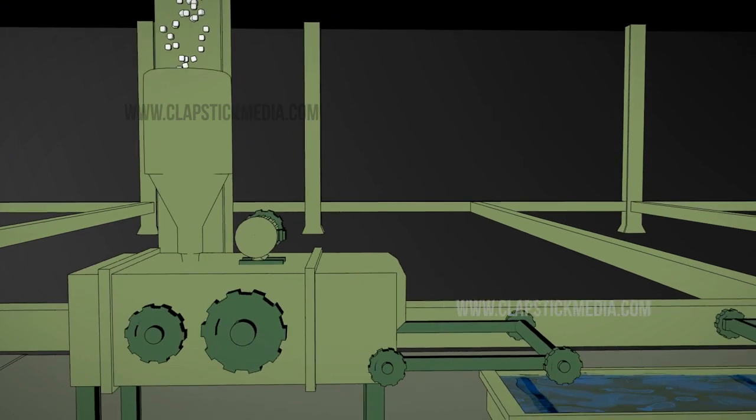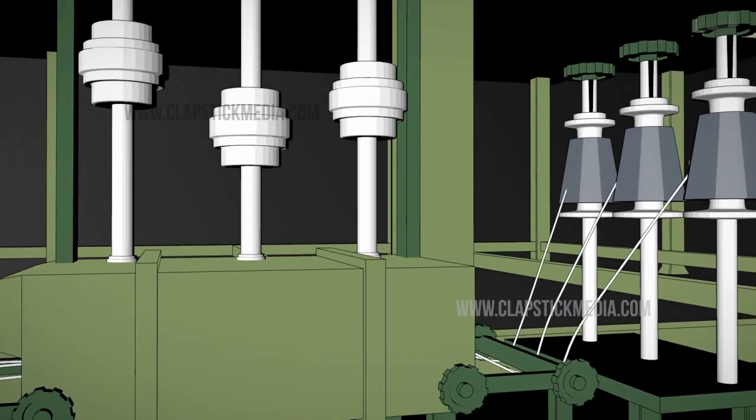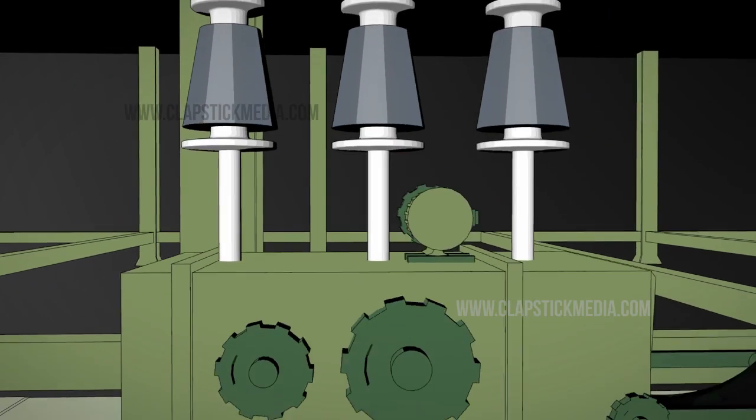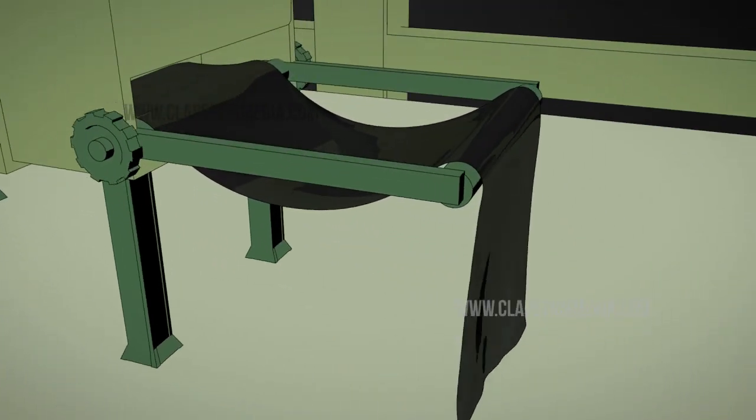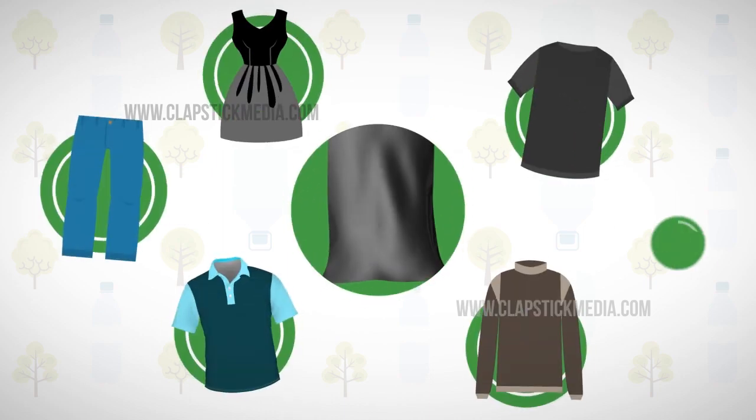Using special yarn production machines, the pellets are spun into high-quality recycled yarn. These yarns are fed through our special weaving processes to generate high-quality recycled fabrics. This fabric is used to produce all of our apparel and accessories products.